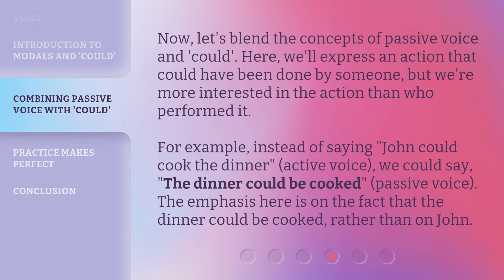Now, let's blend the concepts of passive voice and could. Here, we'll express an action that could have been done by someone, but we're more interested in the action than who performed it. For example, instead of saying 'John could cook the dinner,' which is active voice, we could say 'the dinner could be cooked,' in passive voice. The emphasis here is on the fact that the dinner could be cooked, rather than on John.